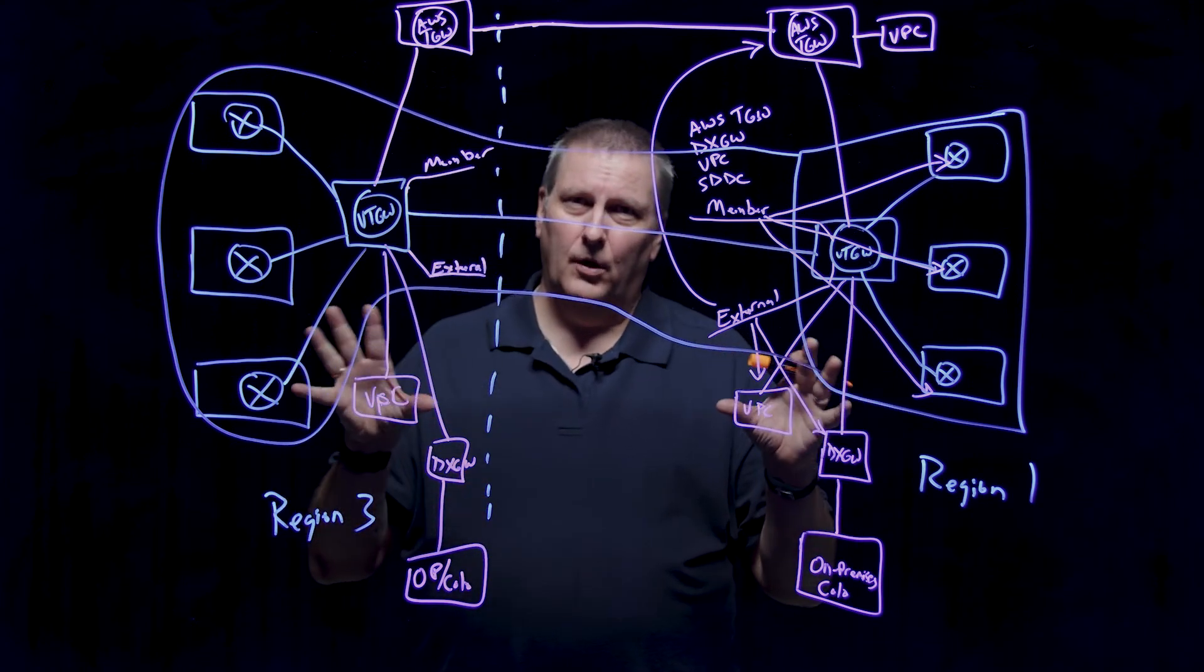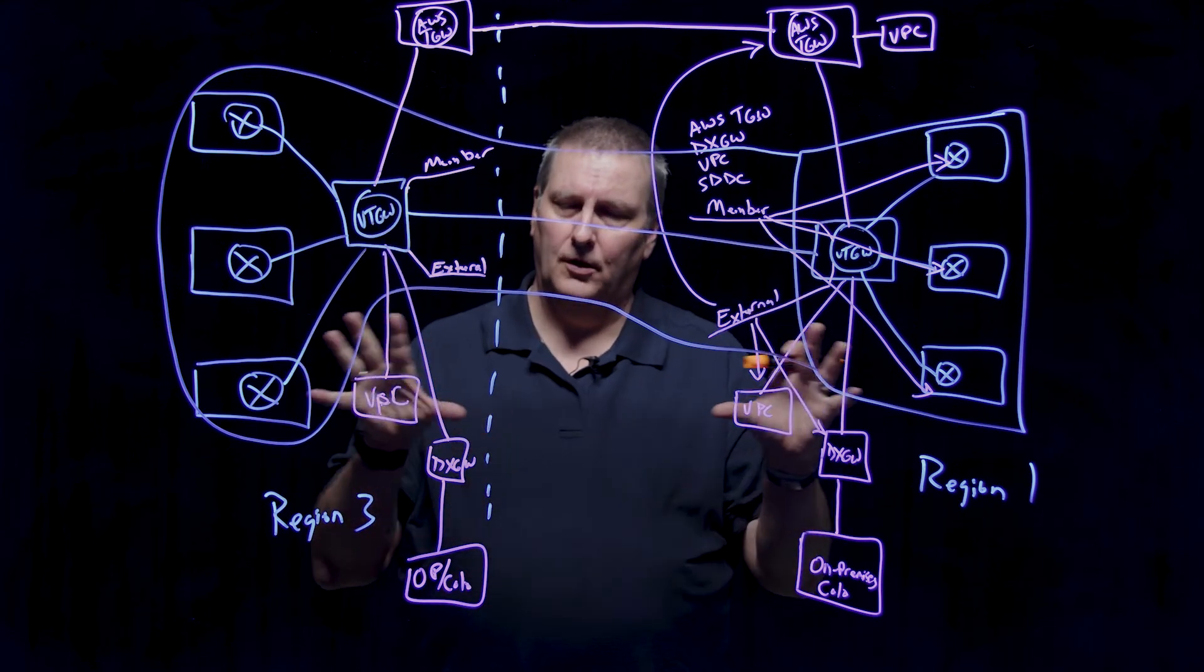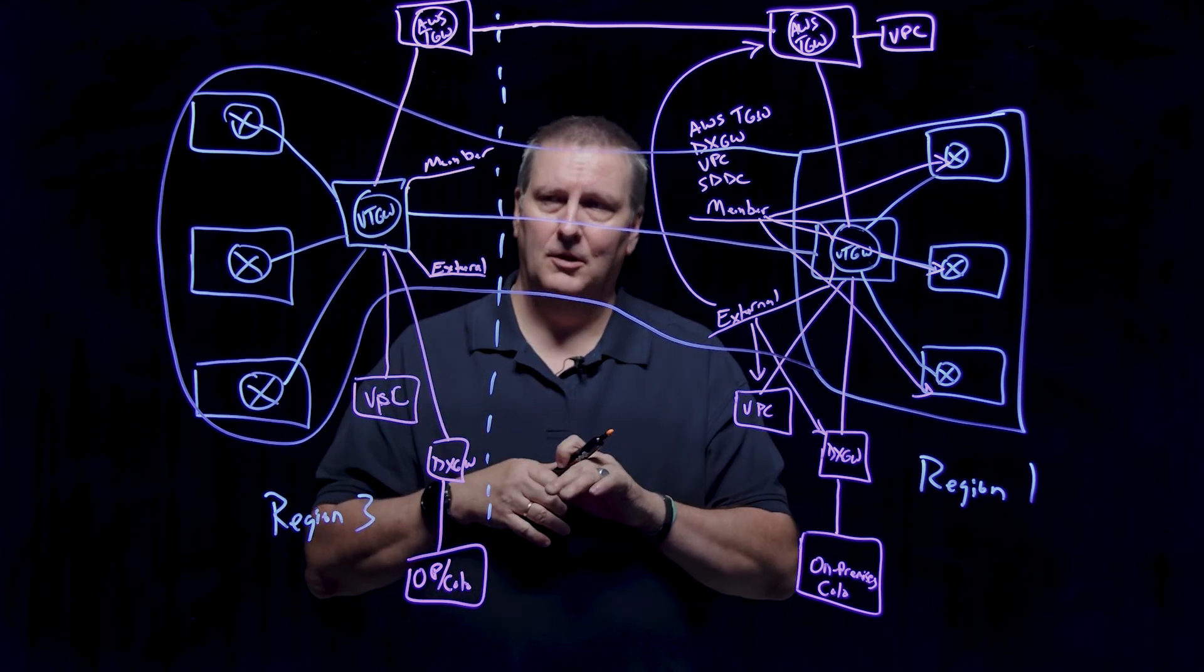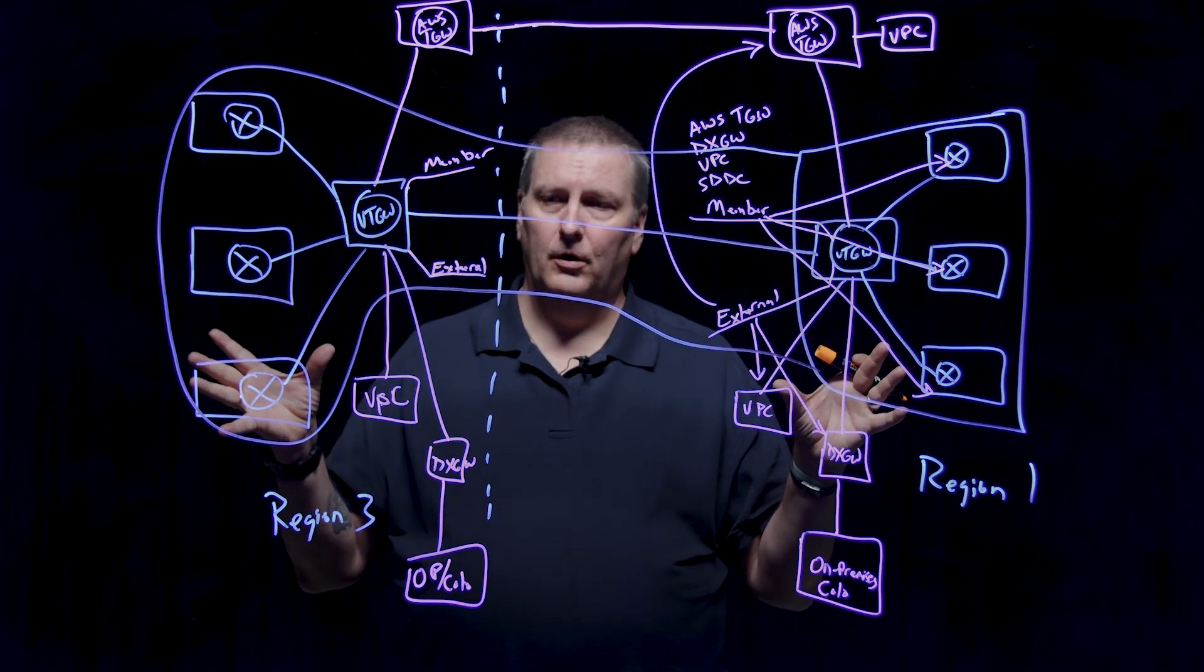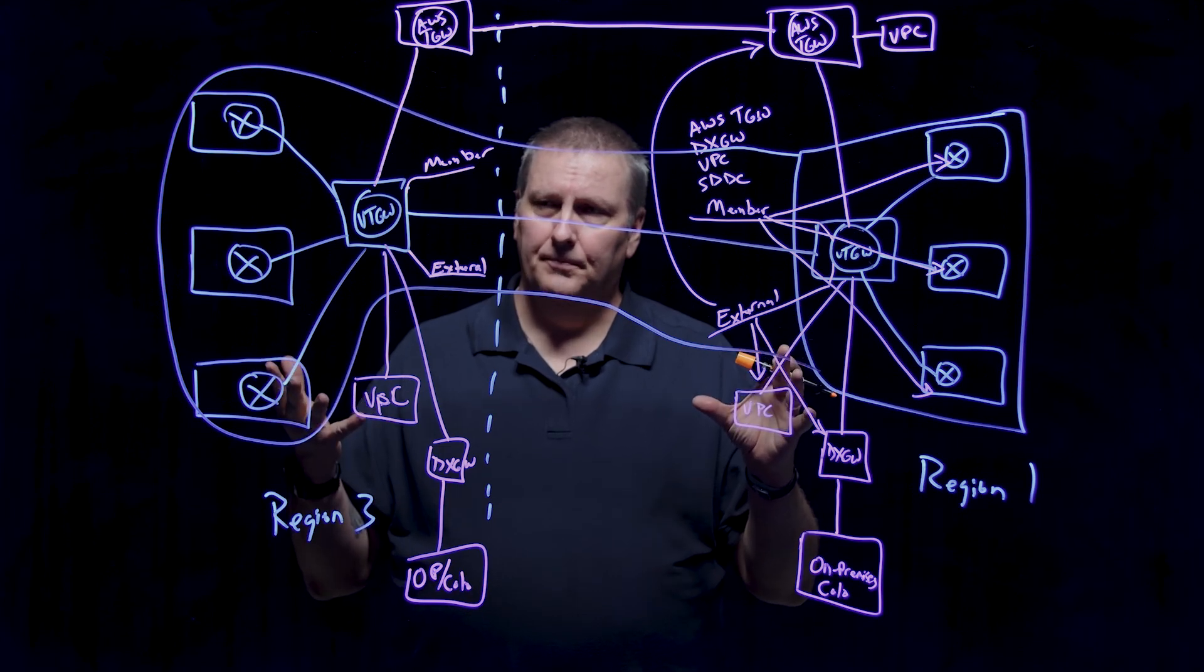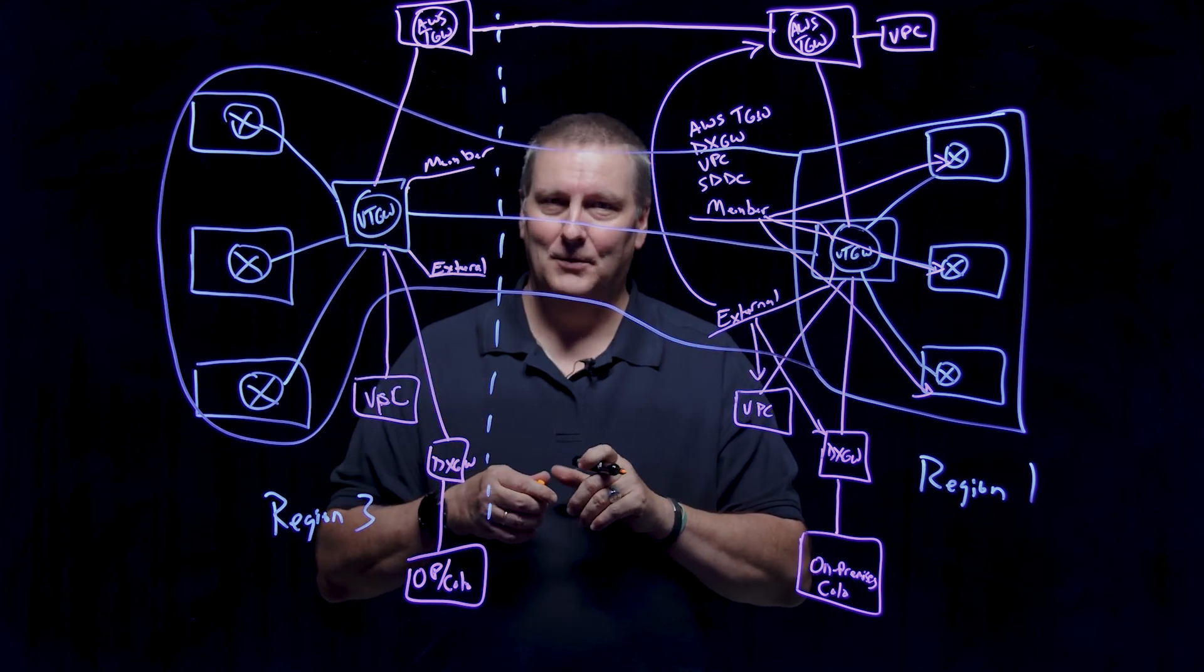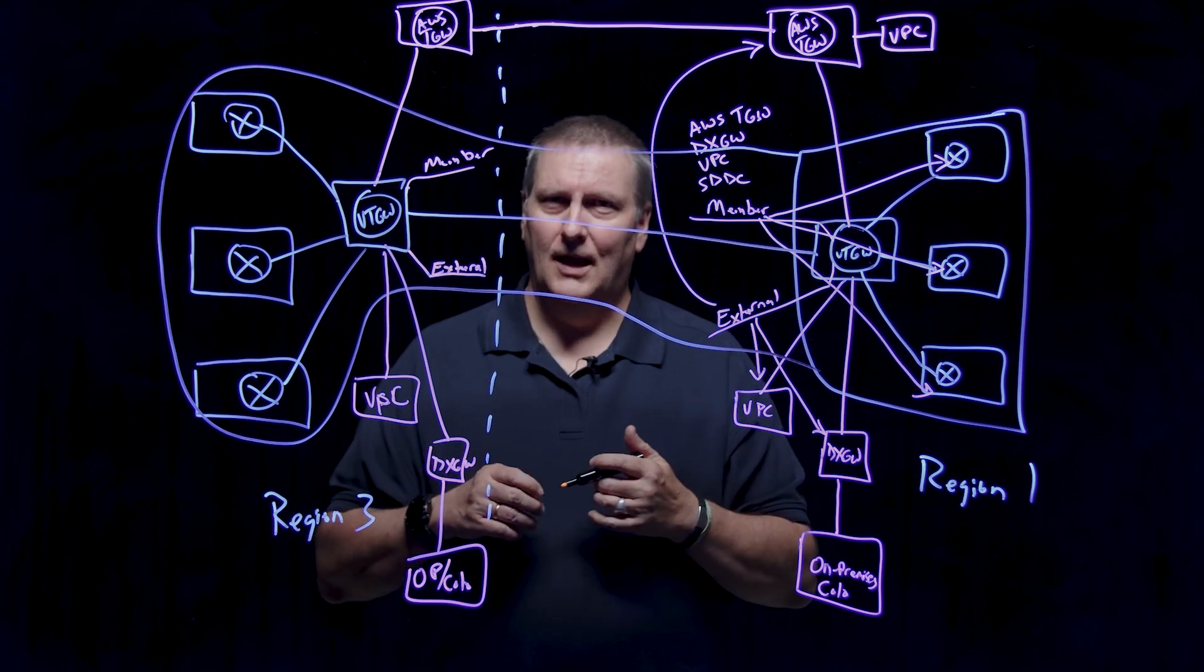Again, relatively simple concept as far as the member and external route tables, what they're comprised of. The big thing to keep in mind when you start talking about multiple regions is how those routes are communicated. In general, SDDCs can talk to any SDDC across the board. It gets a little bit different when you talk about external entities and that's where the regionality comes into play. Hopefully that was helpful and didn't melt too many minds. I think it's a relatively straightforward concept, but I certainly appreciate you taking the time. Thank you very much and have a great rest of your day.